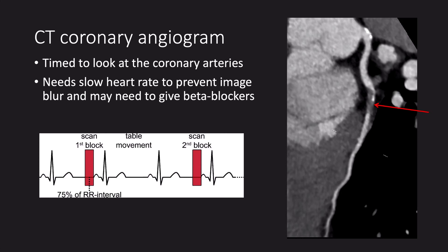A CT coronary angiogram is timed to look at the coronary arteries. To prevent image blur, we slow the heart rate down with beta blockers and scan at end diastole in the cardiac cycle when the heart is relatively still. On this reconstructed image, we can see a subtotal occlusion in the left anterior descending coronary artery.